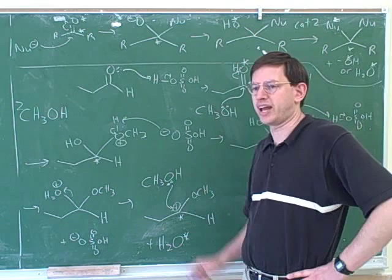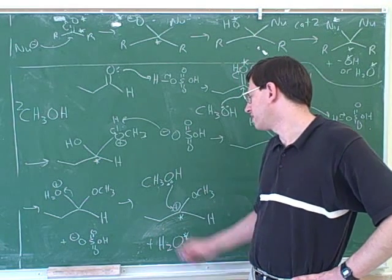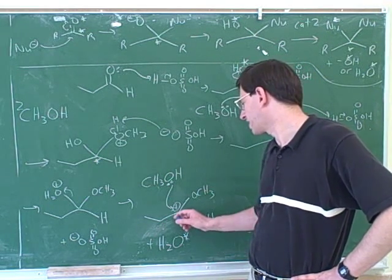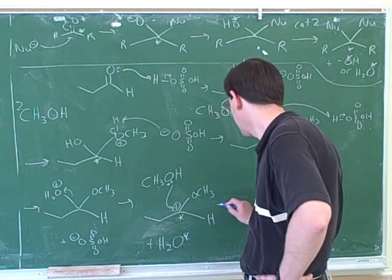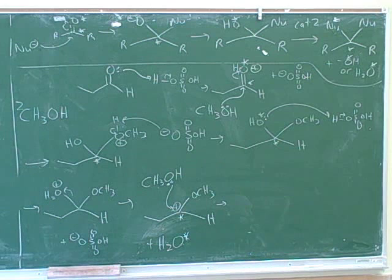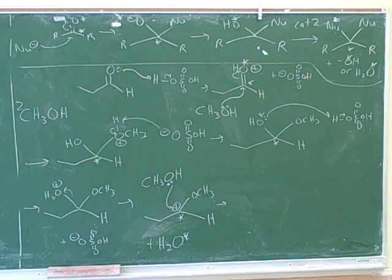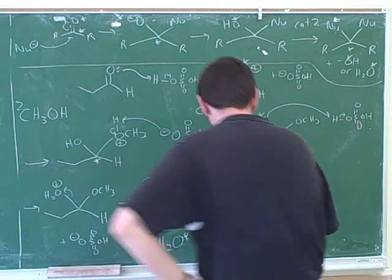So now we can show the second nucleophilic atom attacking. Now we know that alcohols are not great nucleophiles, but obviously a carbocation is a terrific electrophile, so this should be an easy reaction to have happen. And we can draw the intermediate from that step. And then we have to decide what's going to happen next.